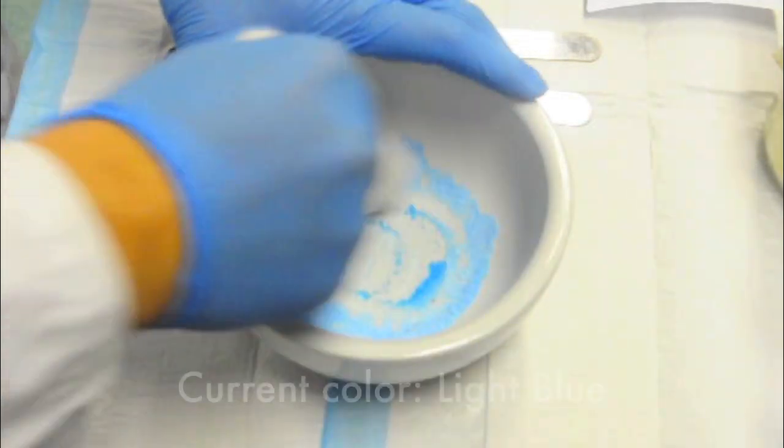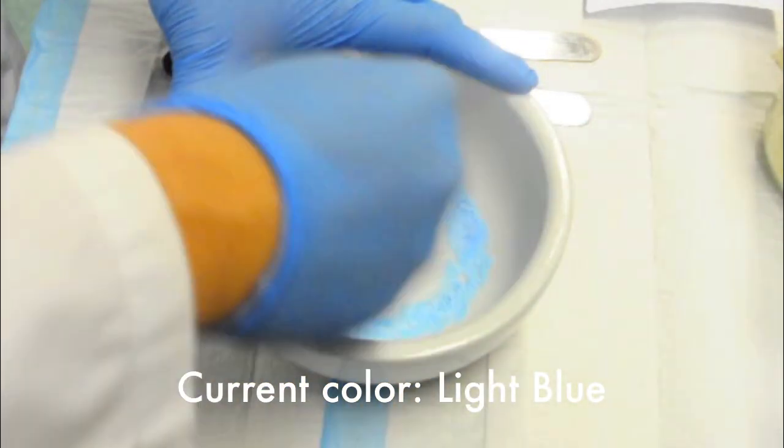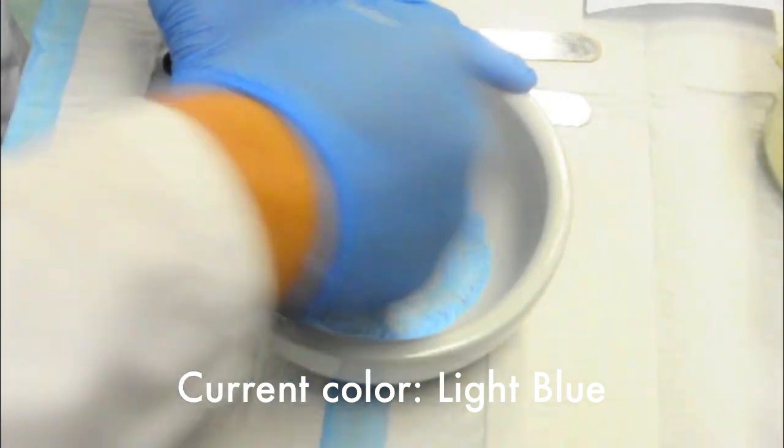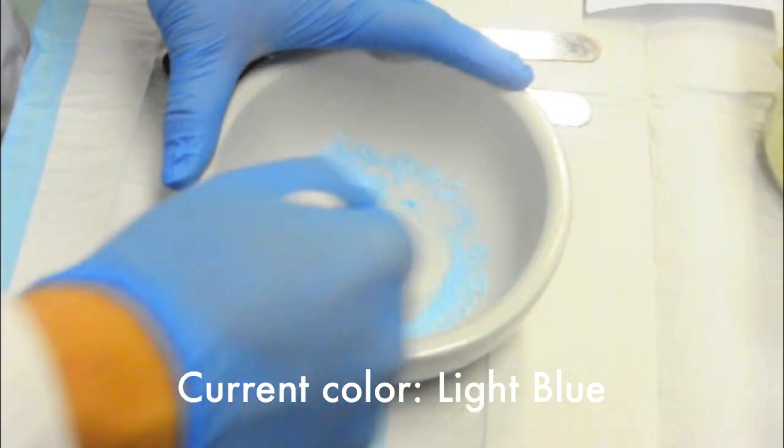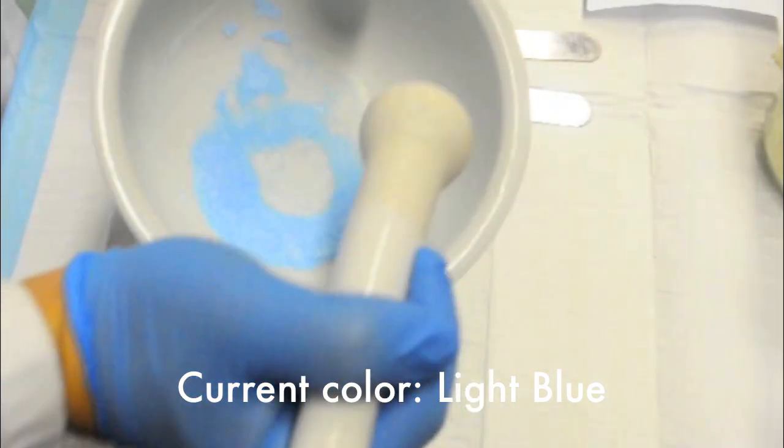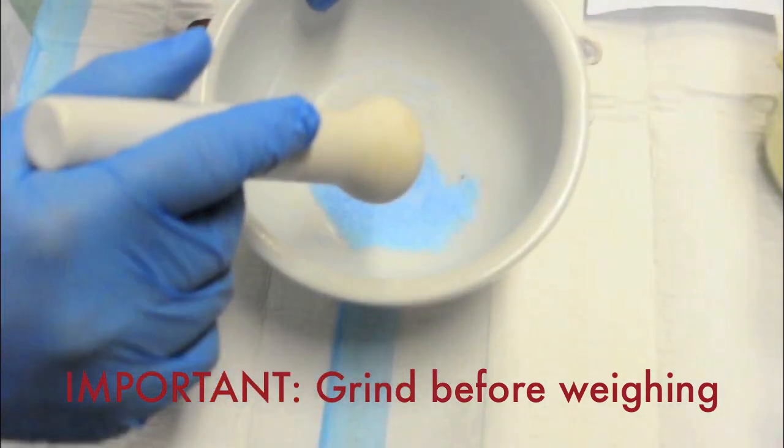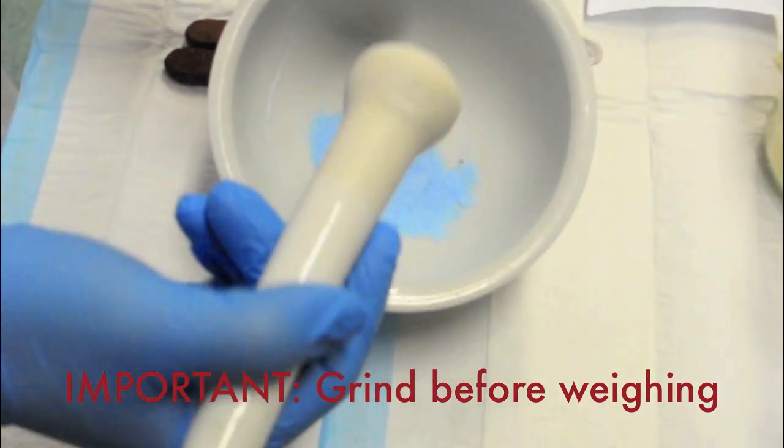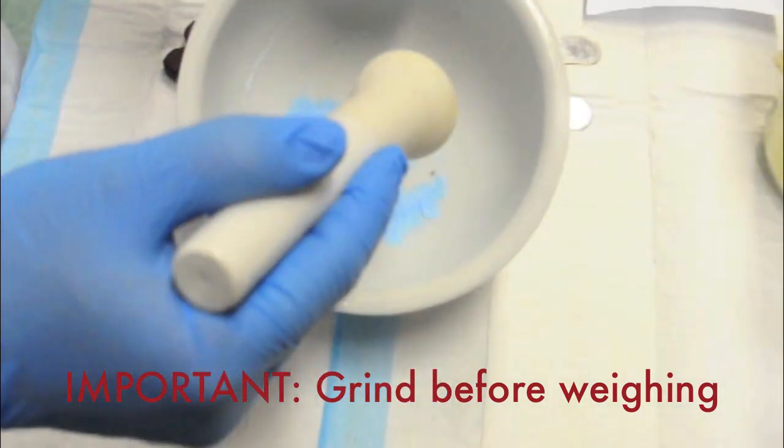And you should be able to observe that there's a slight color change. Just then it was a lighter blue, lighter shade of blue. And once you actually reduce it in size, you can see that it's a lighter blue in color. So now we are getting a fine powder. It is at this point that you start weighing your ingredients. Always remember, point number one is to reduce your particle size then weigh your ingredients for accuracy.